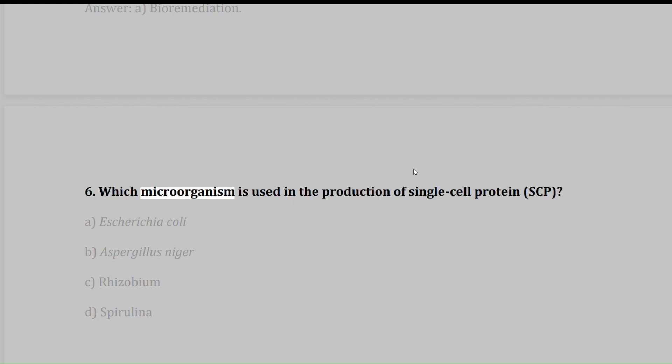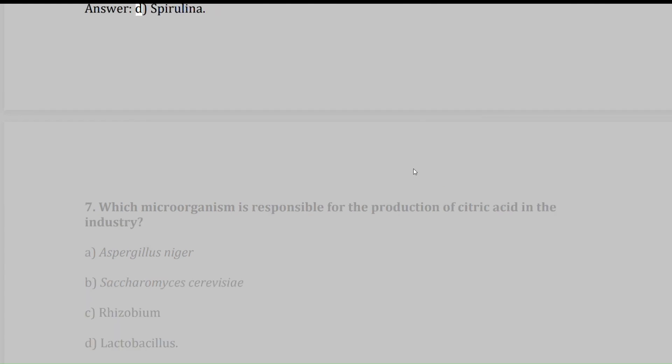6. Which microorganism is used in the production of single-cell protein (SCP)? A. Escherichia coli, B. Aspergillus niger, C. Rhizobium, D. Spirulina. Answer: D. Spirulina.